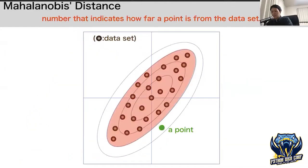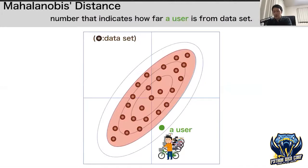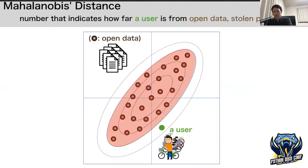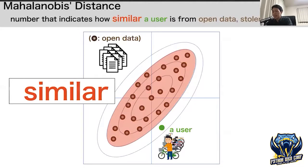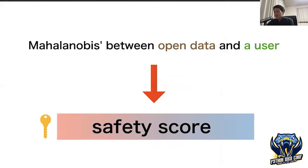Mahalanobis distance is a number that indicates how far a point is from the dataset. By replacing the point with a user and the dataset with open data of stolen people, we get a measure indicating how similar the user data is to stolen people. Therefore, I use Mahalanobis distance as the safety score. Let's take a closer look at the open data used for the calculation.